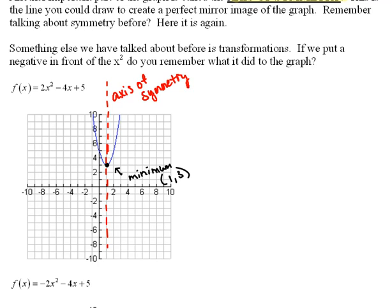Now, what I also want you to notice is this axis of symmetry is a line. So we could label it, name it, as a line. This one would be x equals 1. Do you notice how the axis of symmetry, x equals 1, and the x-coordinate of the vertex are the exact same thing?